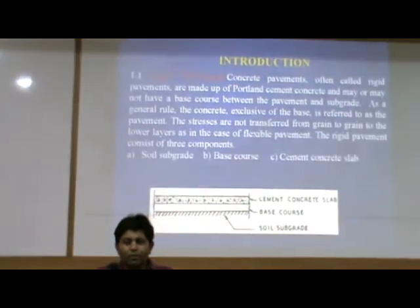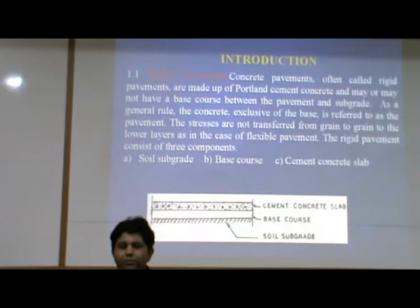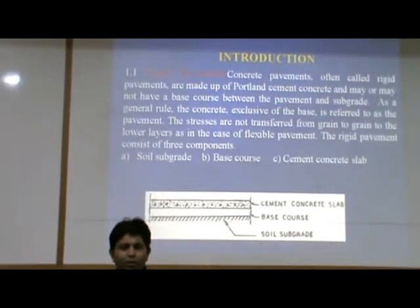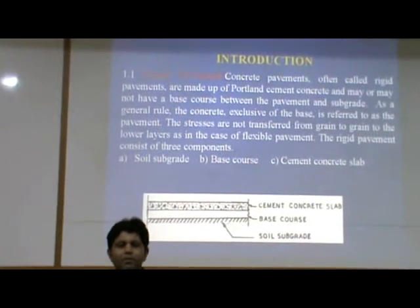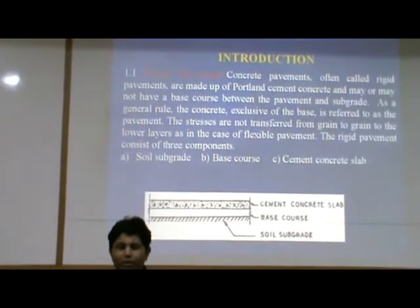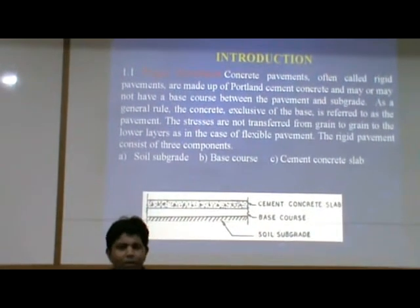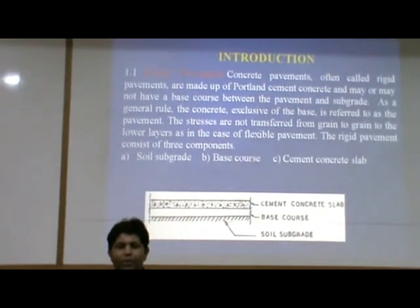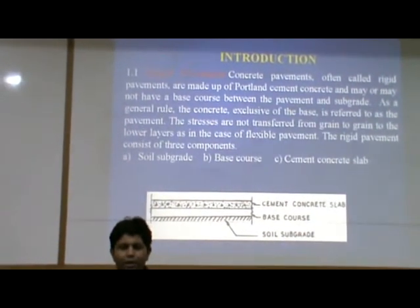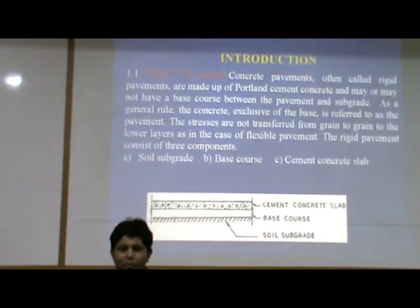So first of all we have to discuss the introduction. What do you mean by rigid pavement? Rigid pavement means concrete pavements, often called rigid pavements, are made up of Portland cement concrete and may or may not have a base course between the pavement and subgrade. As a general rule, the concrete exclusive of the base is referred to as the pavement.